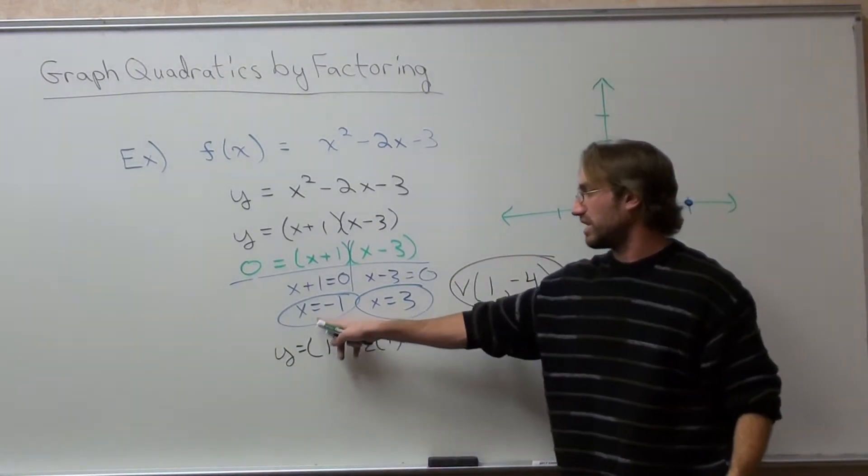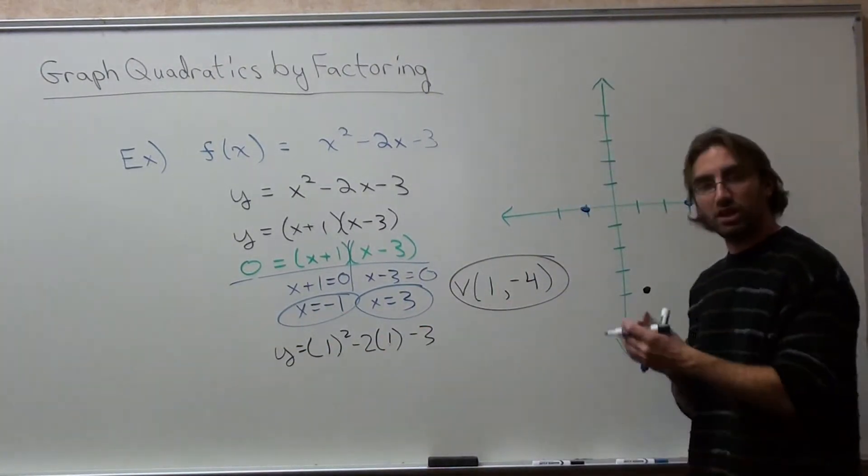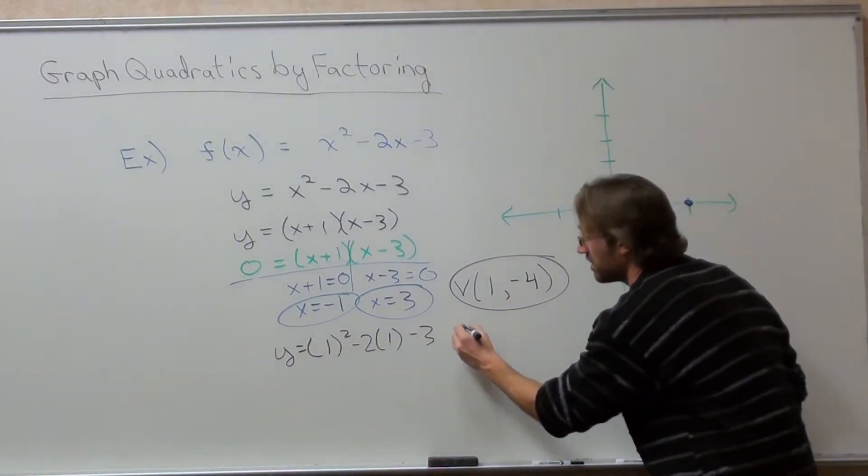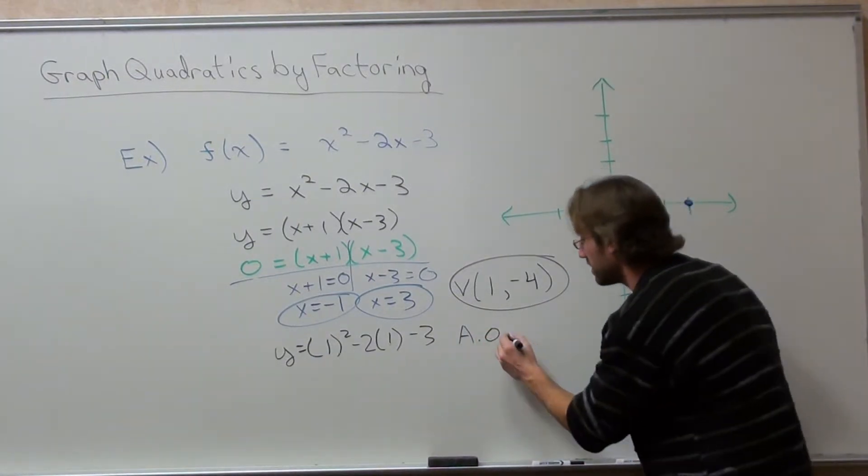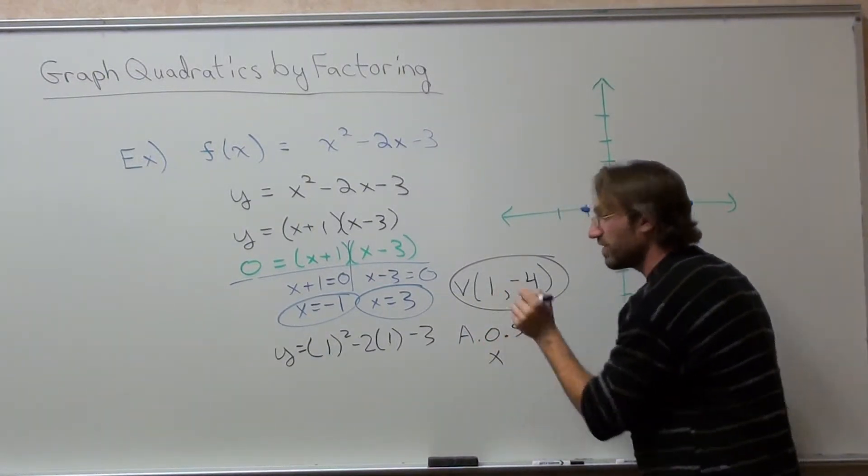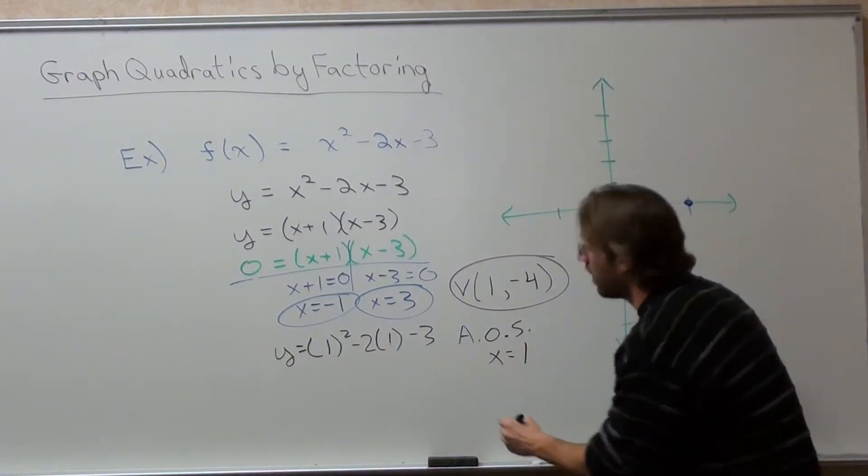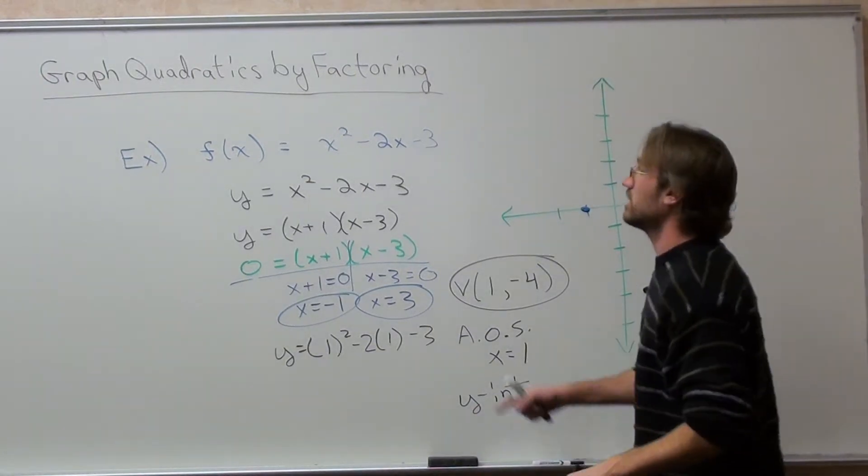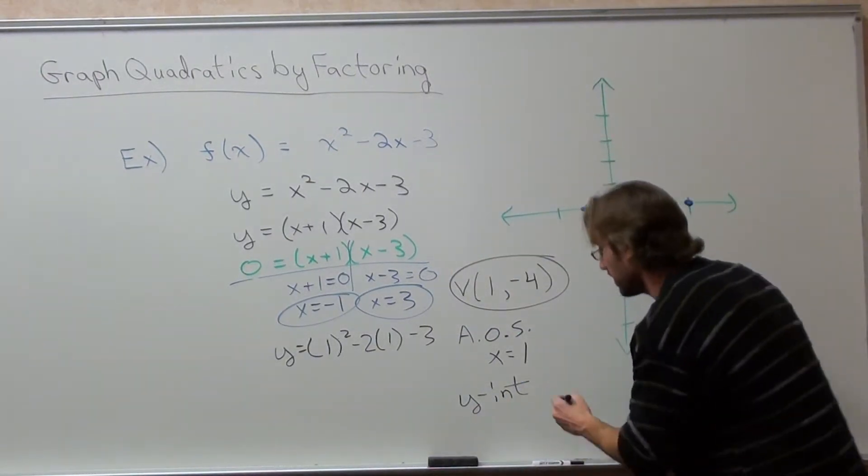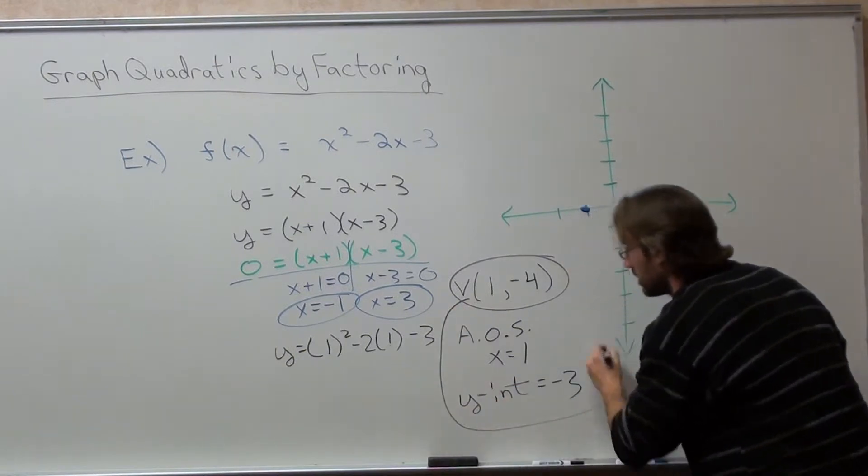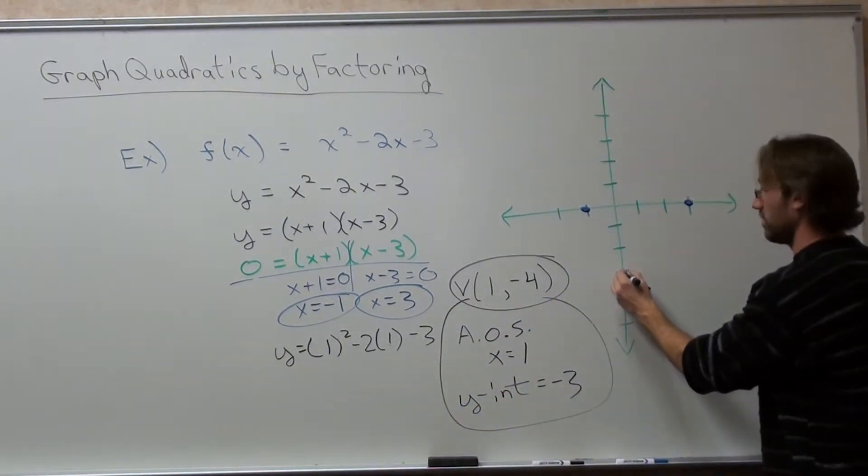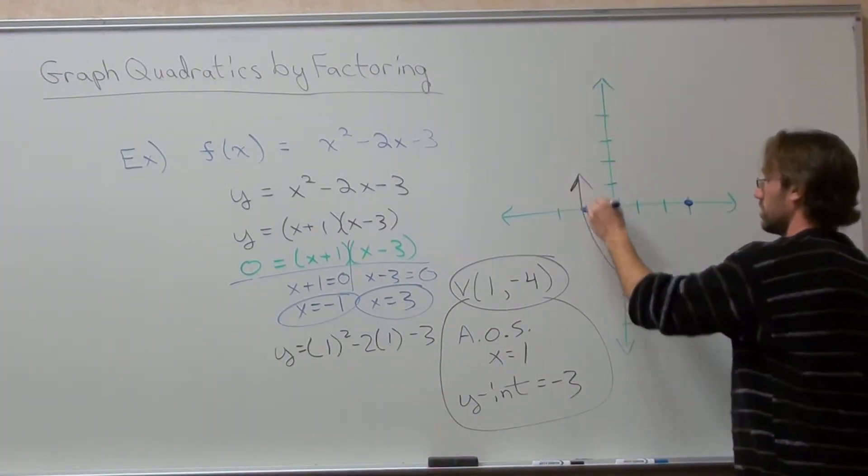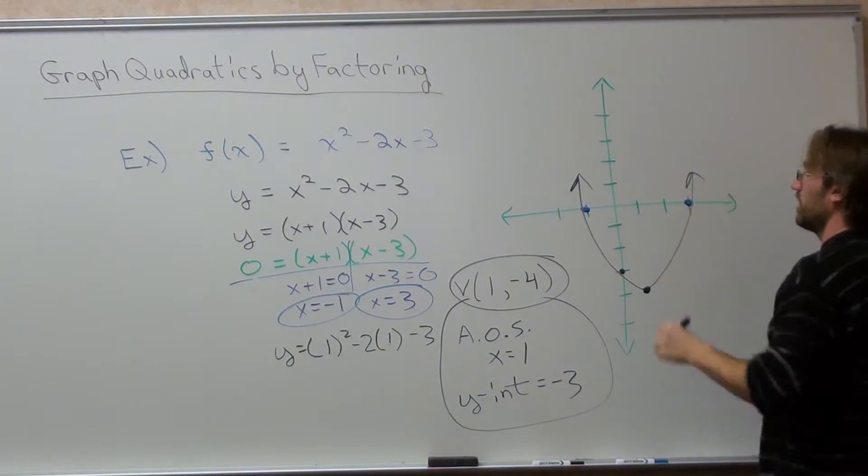My x-intercepts are at negative 1 and 3. My vertex, which is the lowest point of this graph, is at 1, negative 4, or the middle of the graph. My axis of symmetry, for those of you who have been keeping up with the lessons, is the x-value of the vertex, which is 1. My y-intercept - and, by the way, this is all without tables - it's just my c-value, which is negative 3. So, let's go ahead and circle that. So, I know it's going to hit here at the y-intercept. I really have all I need in order to graph this without making a table.